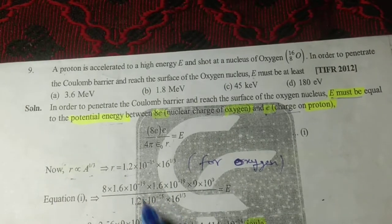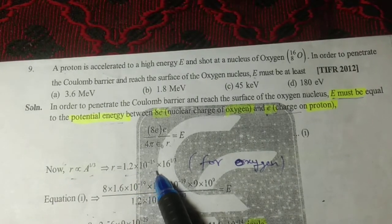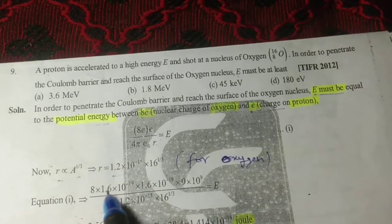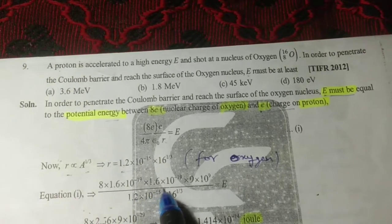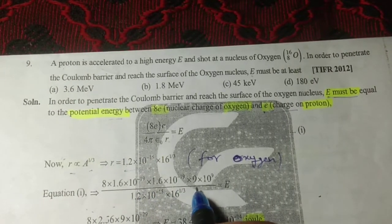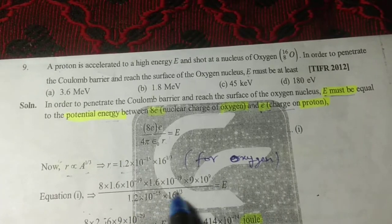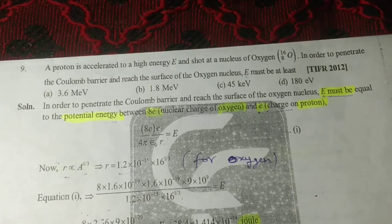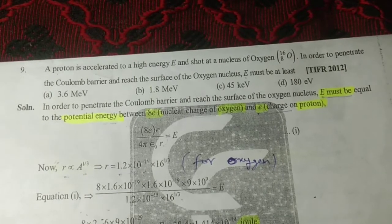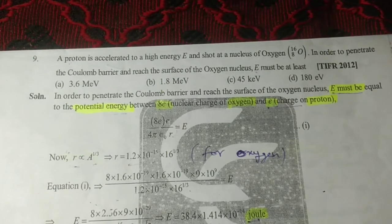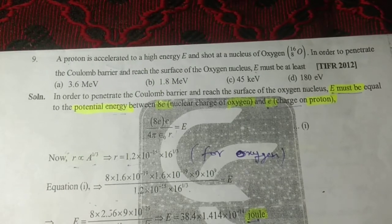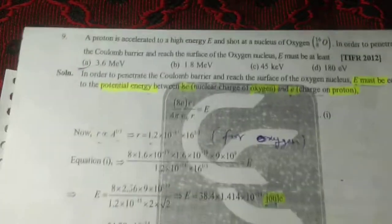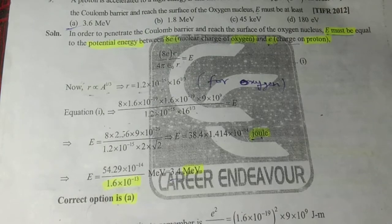Substituting this value of R, we get E = (8 × 1.6 × 10^(-19) × 1.6 × 10^(-19) × 9 × 10^9) / R. After solving, we get approximately 3.4 MeV, so the correct option is (a) 3.6 MeV.